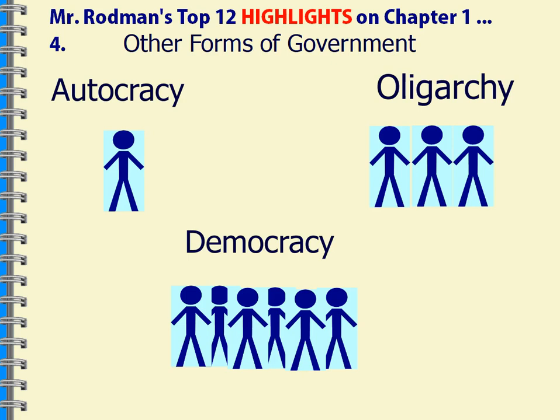An autocracy — we see this in totalitarian governments with one leader, a dictator being a more common term. In a democracy, the democratic form of government, we have representative government, consent of the governed, and we elect those leaders through representative government. If we don't like them, in the next election we vote for somebody else.